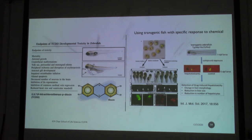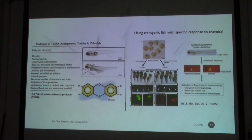You can study changes in liver morphology — the control looks normal, but the hepatotoxicant would affect the size of the liver. There is also a reduction in the number of hepatocytes, the liver cells.